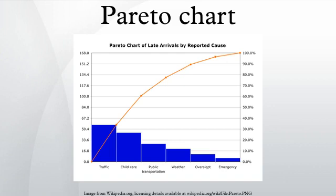The left vertical axis is the frequency of occurrence, but it can alternatively represent cost or another important unit of measure. The right vertical axis is the cumulative percentage of the total number of occurrences, total cost, or total of the particular unit of measure. Because the reasons are in decreasing order, the cumulative function is a concave function.